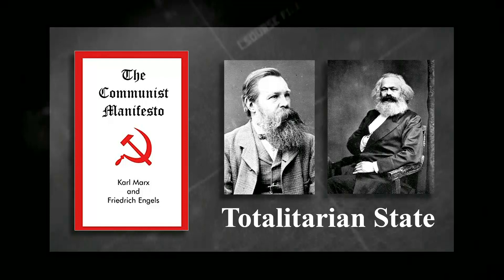I believe that all the books and articles written about what caused the Civil War are correct in their limited way, but they're lacking the chain that links them all together. It goes back to the Illuminati and how Marx and Engels showed in the Communist Manifesto that the intent was to subvert society as the basis for changing a country and installing a totalitarian state.